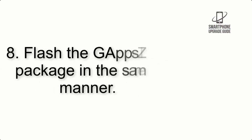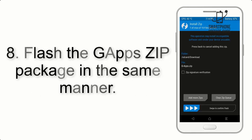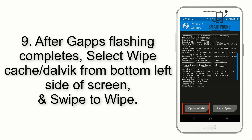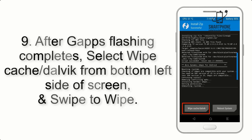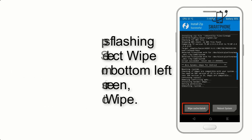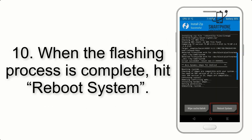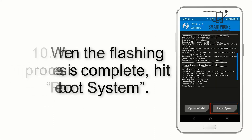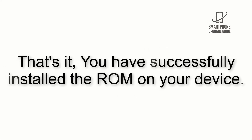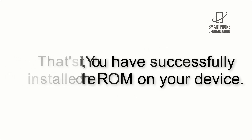Step 8: Flash the GApps zip package in the same manner. Step 9: After GApps flashing completes, select Wipe Cache and Dalvik from the bottom left side of the screen and swipe to wipe. Step 10: When the flashing process is complete, hit Reboot System. That's it — you have successfully installed the ROM on your device.